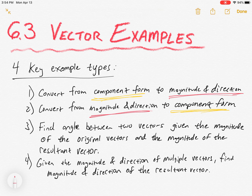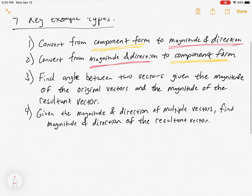Number three: finding the angle between two vectors given the magnitude of the original vectors and also the magnitude of the resultant vector. And number four: given the magnitude and direction of multiple vectors — we'll do as many as two or three — find the magnitude and direction of the resultant vector.